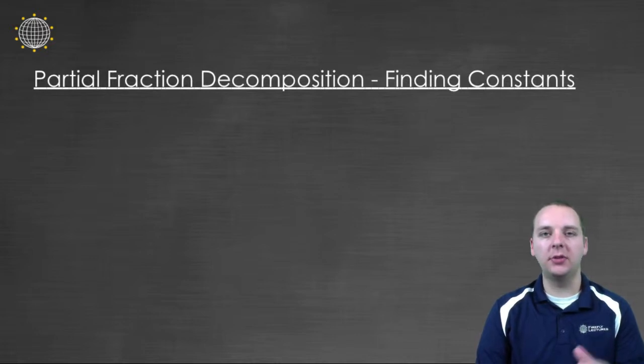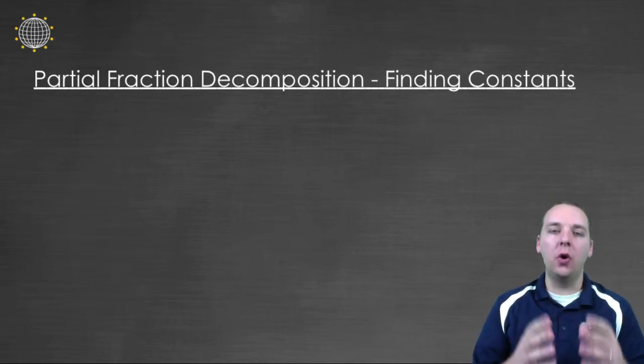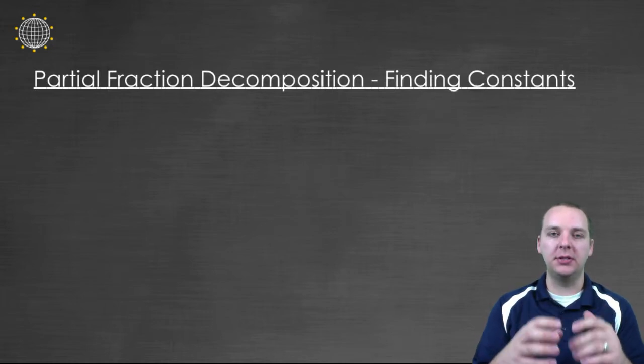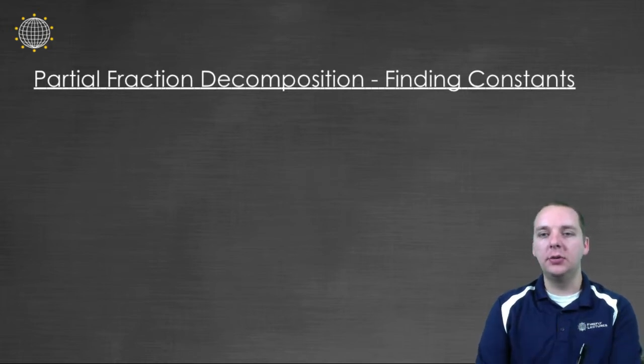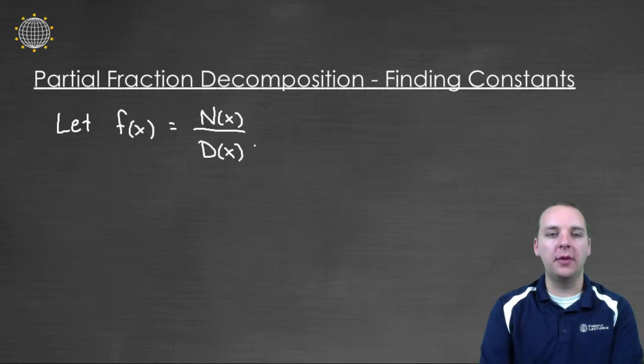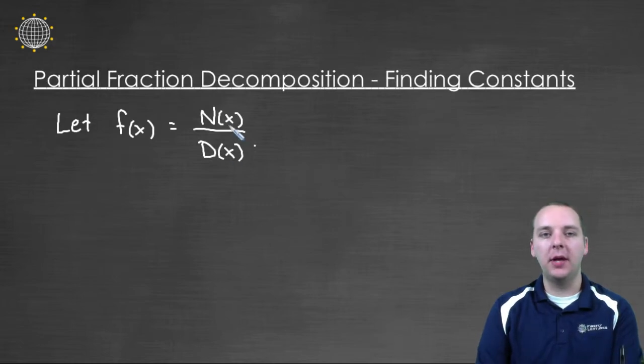Recently we've been discussing partial fraction decomposition and we understand now its main goal or main objective, which is to take a big ugly rational expression and decompose it or break it apart into a sum of smaller rational expressions. So just walking through those steps one more time very quickly. If we had a function that was a rational expression where you have a numerator polynomial divided by a denominator polynomial, we'll call them n and d so that we can remember them, then here's how we're going to decompose this guy in theory.